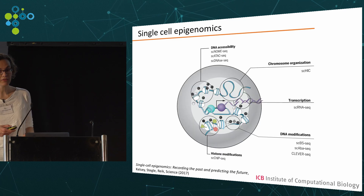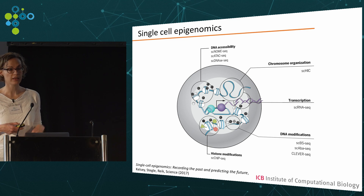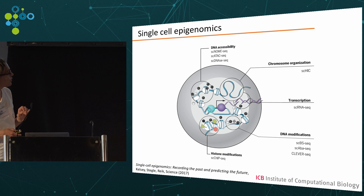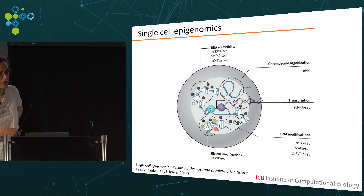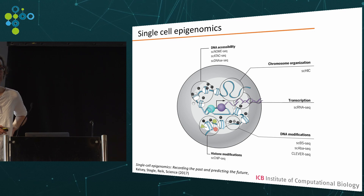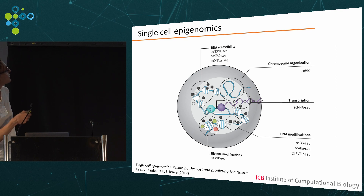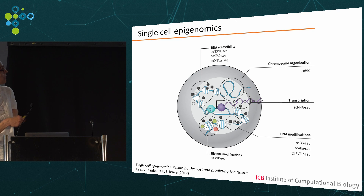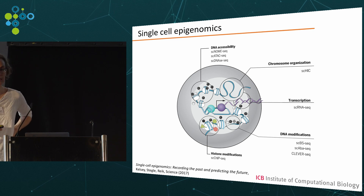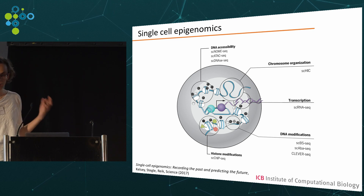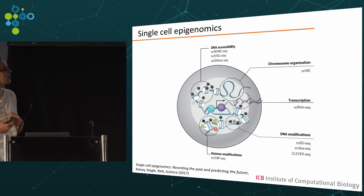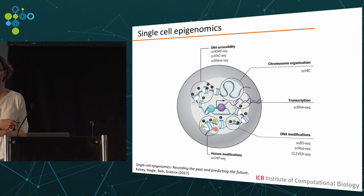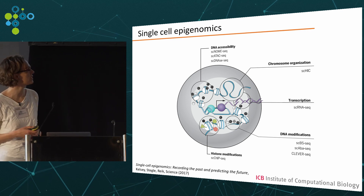There are many different technologies that allow us to profile the epigenome of a single cell. The most used ones are single cell bisulfite sequencing for the analysis of DNA methylation, and single cell ATAC-seq for the analysis of open chromatin. We have seen in the last couple of years studies that profile a lot of cells — a few thousand — and now with microfluidic techniques for single cell ATAC-seq, there will be more and more cells coming.